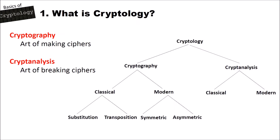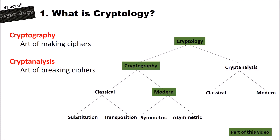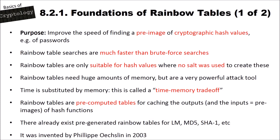When you watch the other videos in this series you probably know this slide here. In this video we will deal with cryptology, cryptography and modern cryptography. Let's come to the foundations of rainbow tables. The purpose of rainbow tables is to improve the speed of finding a pre-image of a cryptographic hash value, for instance passwords.